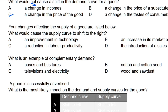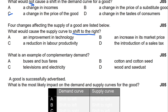Question number four: four changes affecting the supply of a good are listed — what would cause the supply curve to shift to the right? A rightward shift means an increase in supply. An improvement in technology can increase supply and shift the curve right. A reduction in labor productivity reduces supply (shifts left). An increase in market price causes movement along the supply curve, not a shift. Introduction of a sales tax shifts supply left. So Option A — improvement in technology — is the correct answer.